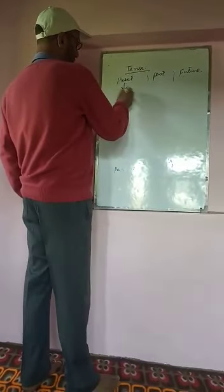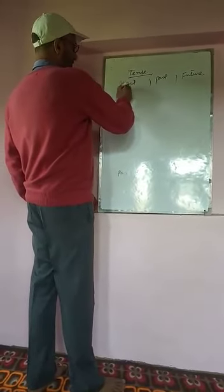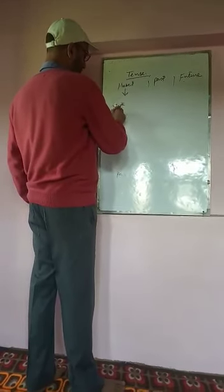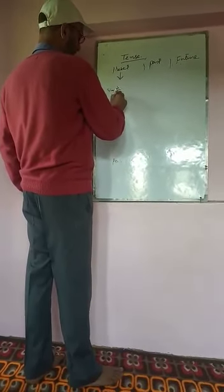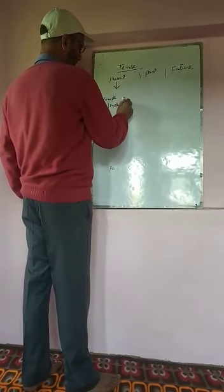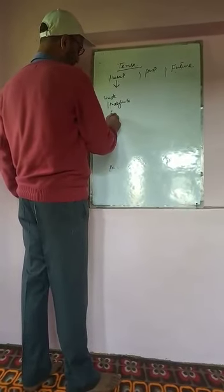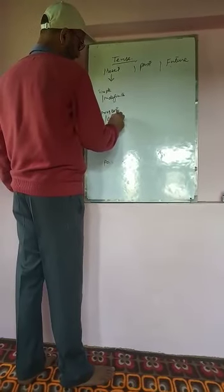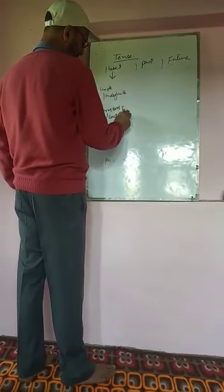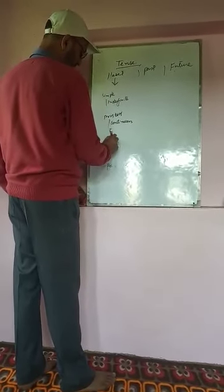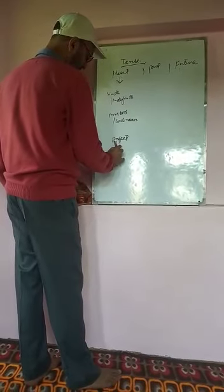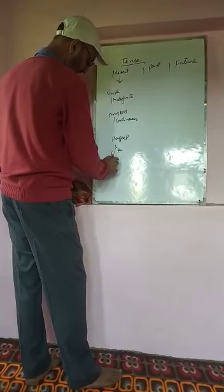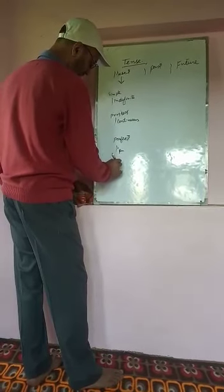In each tense there are four types: simple, also called indefinite; progressive or continuous; perfect; and perfect continuous.